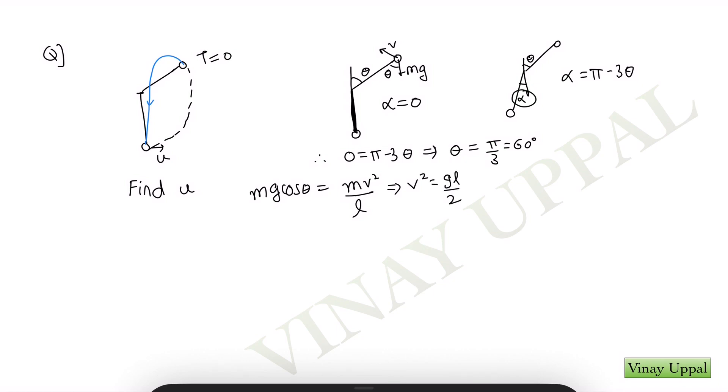And then it's just energy conservation. You can have v square is u square minus 2g and the height would be L plus L cos theta. So 2gl plus L cos theta would be L by 2. And you will get your initial speed. So you can see a lot of time and effort is saved by using a shortcut instead of writing the entire projectile equations.